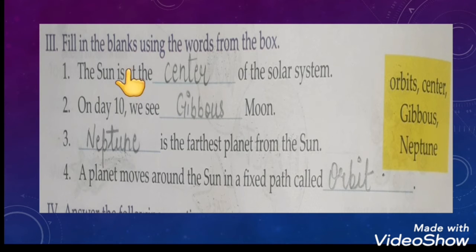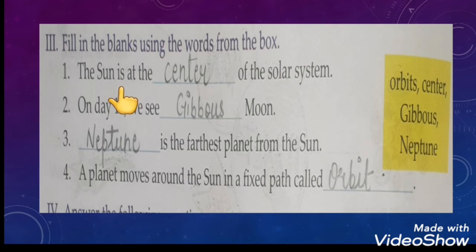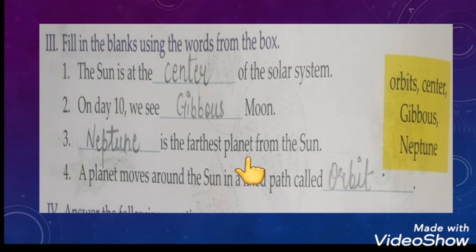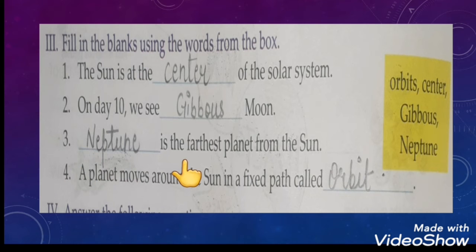Now we will move to fill in the blanks using the words from the box. The sun is at the dash of the solar system — 'center'; the sun is the center of the solar system. On day 10 we see dash moon — on day 10 we see gibbous moon. Dash is the farthest planet from the sun — Neptune is the farthest planet. A planet moves around the sun in a fixed path; it is called an orbit.